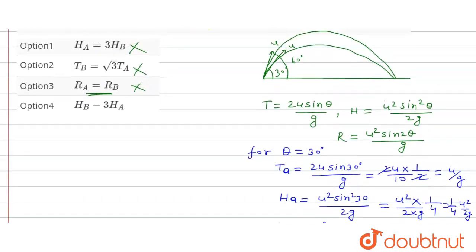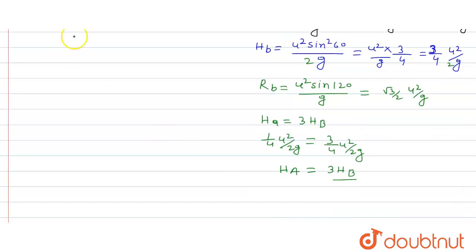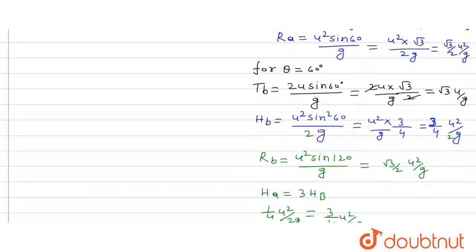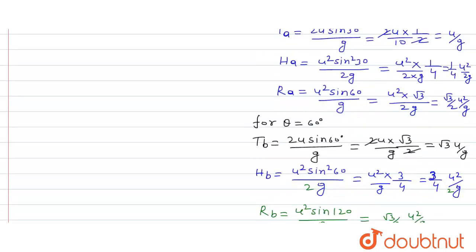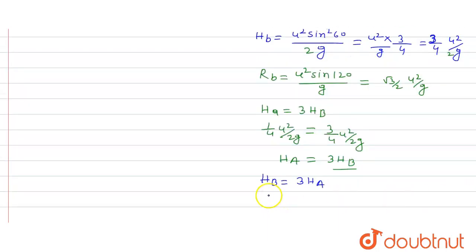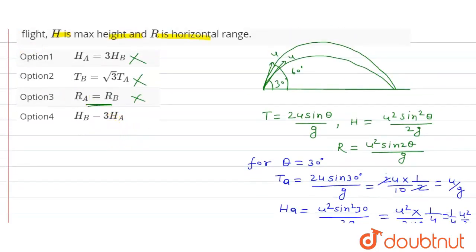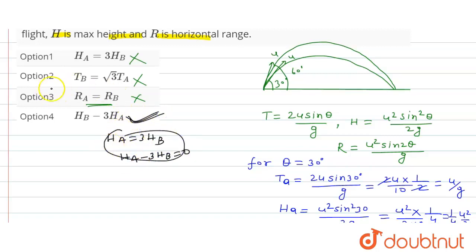Now checking hB equals 3 hA: hB is 3 over 4 u squared over 2g, and 3 times hA is 3 times 1 over 4 u squared over 2g, which equals 3 over 4 u squared over 2g. So hA equals 3 times hB is incorrect — hA minus 3hB does not equal zero. Therefore this option is incorrect, and the only correct answer to the question is option 4. Thank you.